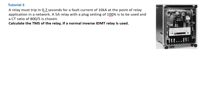Moving back to this tutorial: the CT ratio chosen is 800 over 5. They are asking us to calculate the TMS — the Time Multiplier Settings of the relay — given that a normal inverse IDMT relay is used.